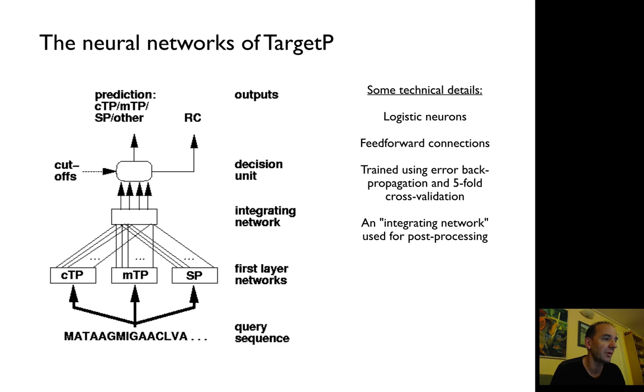Then you feed the sequence in. The idea is that you develop three different networks: one to detect chloroplast targeting peptides, one for mitochondrial peptides, and one for signal peptides. Then you have an integrated network with some cut-offs and then you make predictions. It also has a reliability output. You do this using five-fold cross-validation. Some technical details: you use logistic neurons and feed-forward connections only. So quite standard machine learning methods.